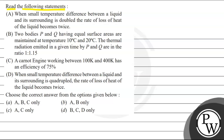Statement B: Two bodies P and Q having equal surface areas are maintained at temperatures 10 degrees Celsius and 20 degrees Celsius. The thermal radiation emitted in a given time by P and Q are in the ratio 1 is to 1.15.